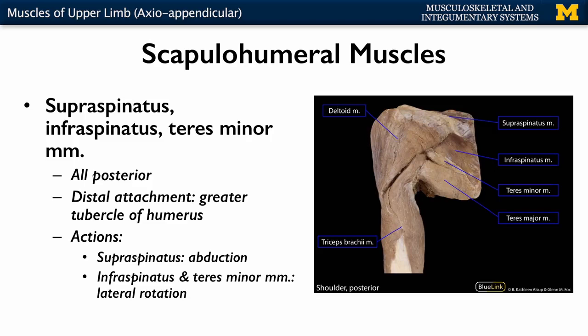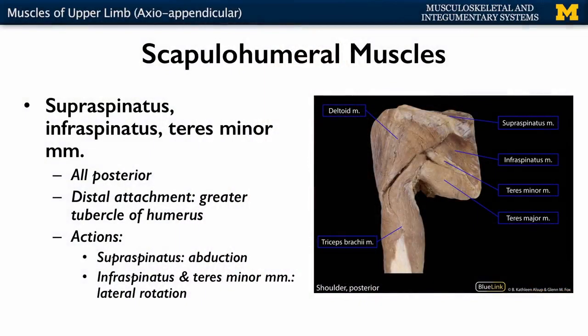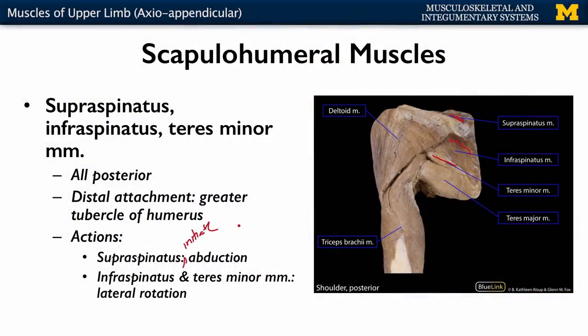Then we have the rotator cuff muscles. We talked quite a bit about them when we discussed the specifics of the glenohumeral joint, but let's talk a bit more about their actions. Looking at the posterior muscles, you have your supraspinatus, infraspinatus, and teres minor. Supraspinatus is above the scapular spine, infraspinatus is below — the names make sense. Underneath you have the teres minor. These are all going to attach on the greater tubercle of the humerus — that's why the greater tubercle is larger than the lesser tubercle. Supraspinatus is going to initiate abduction, allowing the movement to start, and then the deltoid will take over. Infraspinatus and teres minor are going to play a role in terms of lateral rotation of the shoulder joint.